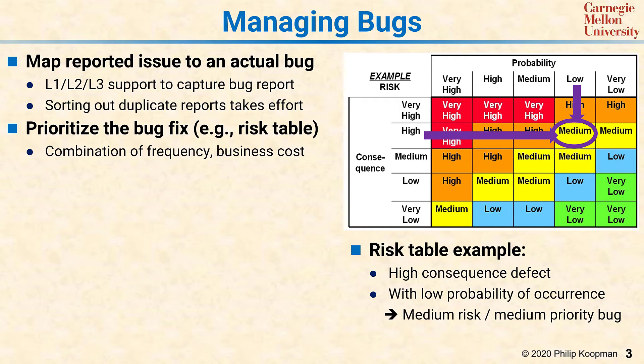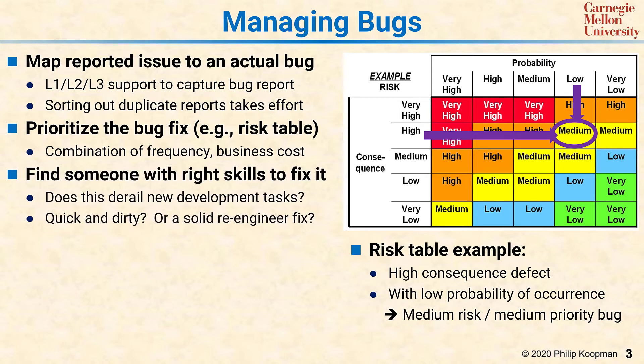Once you have a bug, you can't just toss it to engineering and say fix it. Often fixing a bug requires someone with particular skills — that person might have skills related to the technology behind the software, or it might be the person who worked on the code, or you might have a system divided into many subsystems allocated to dispersed development teams. Thus, which bugs you fix may have to do as much with resources as it does with assigned risk. A related question is: do you want a quick and dirty fix, or do you want a solid re-engineering fix? Usually you want the solid engineering fix, but a lot of times customers are screaming so loud you go with quick and dirty, and doing so accumulates technical debt.